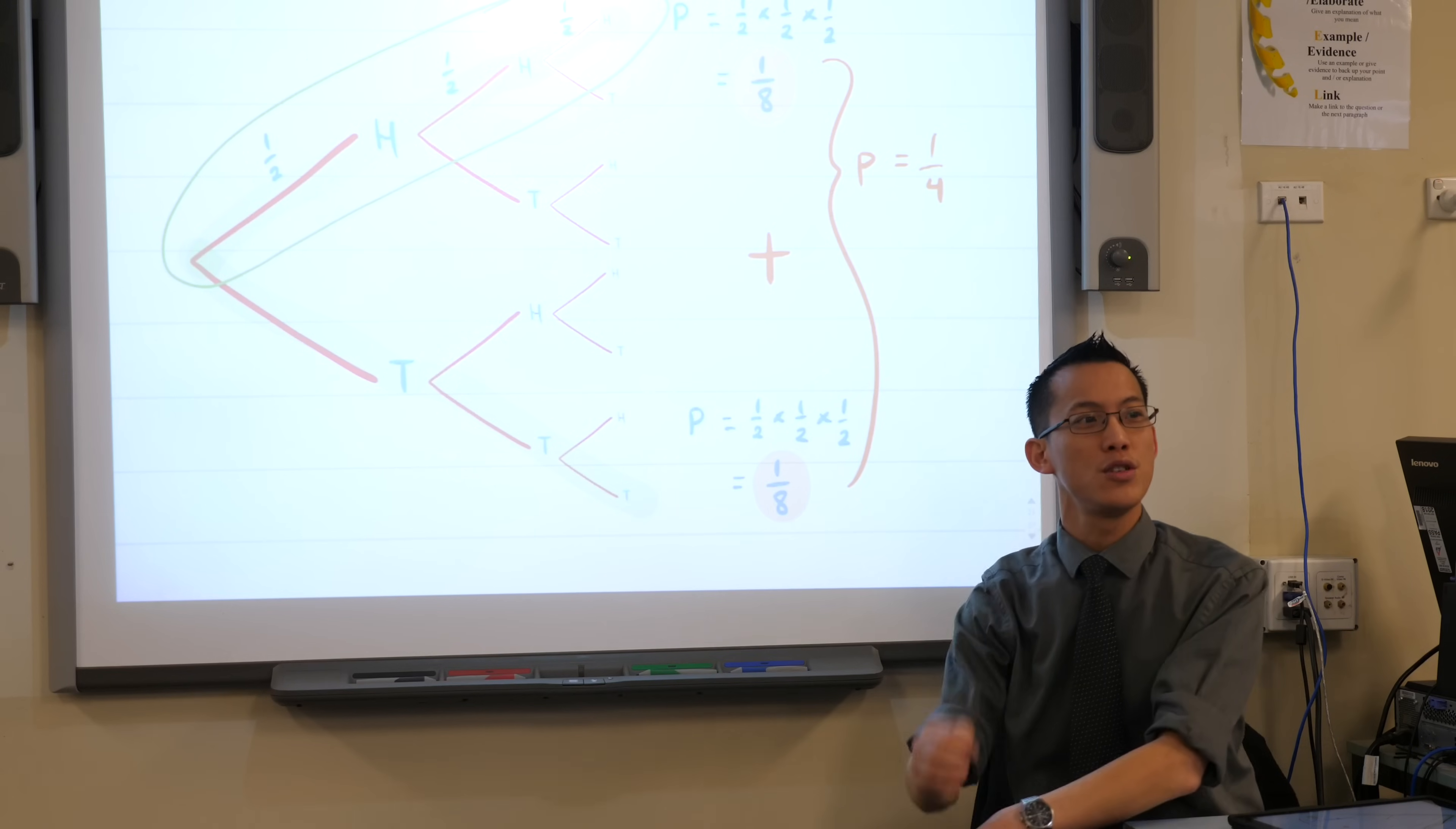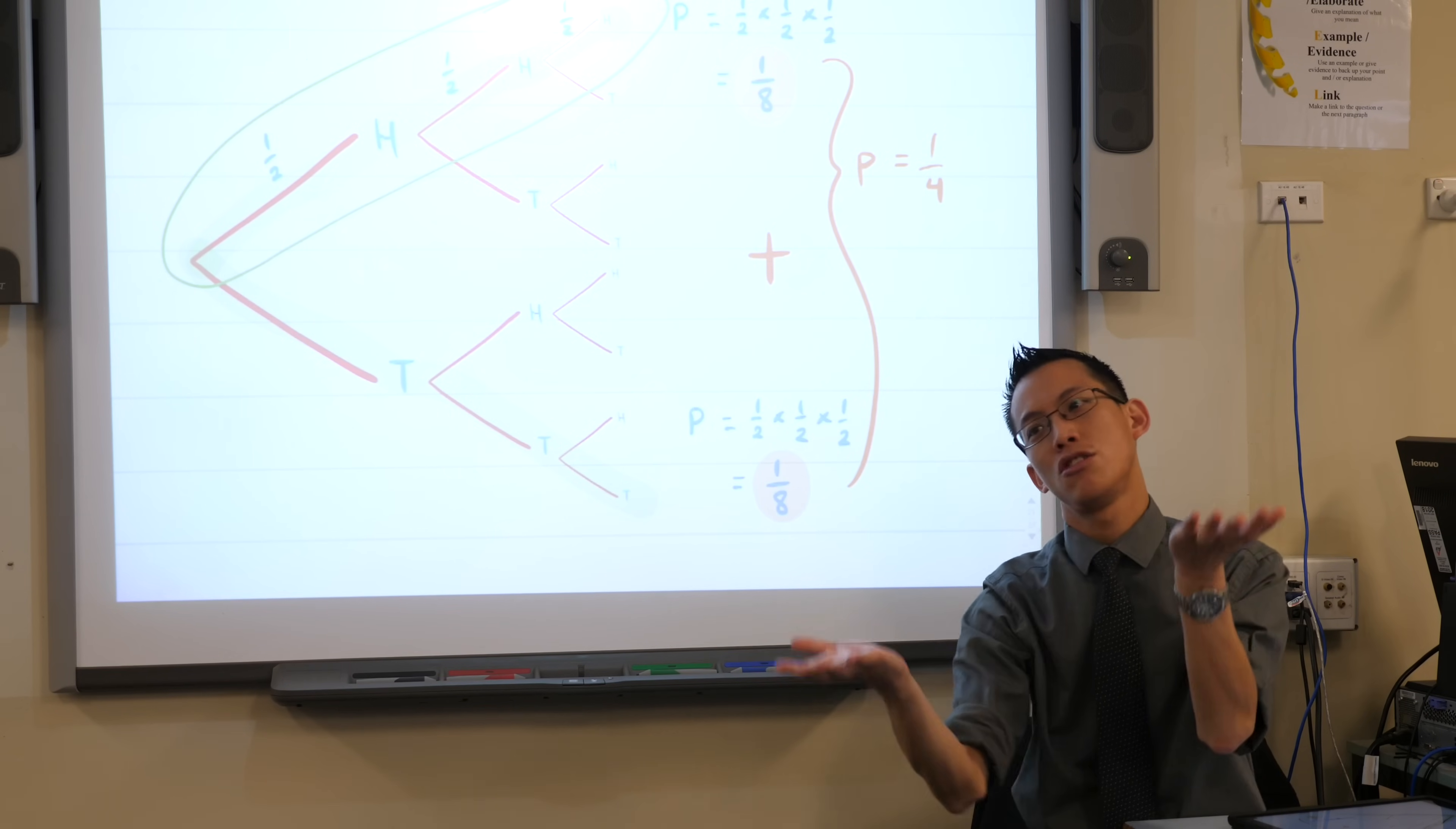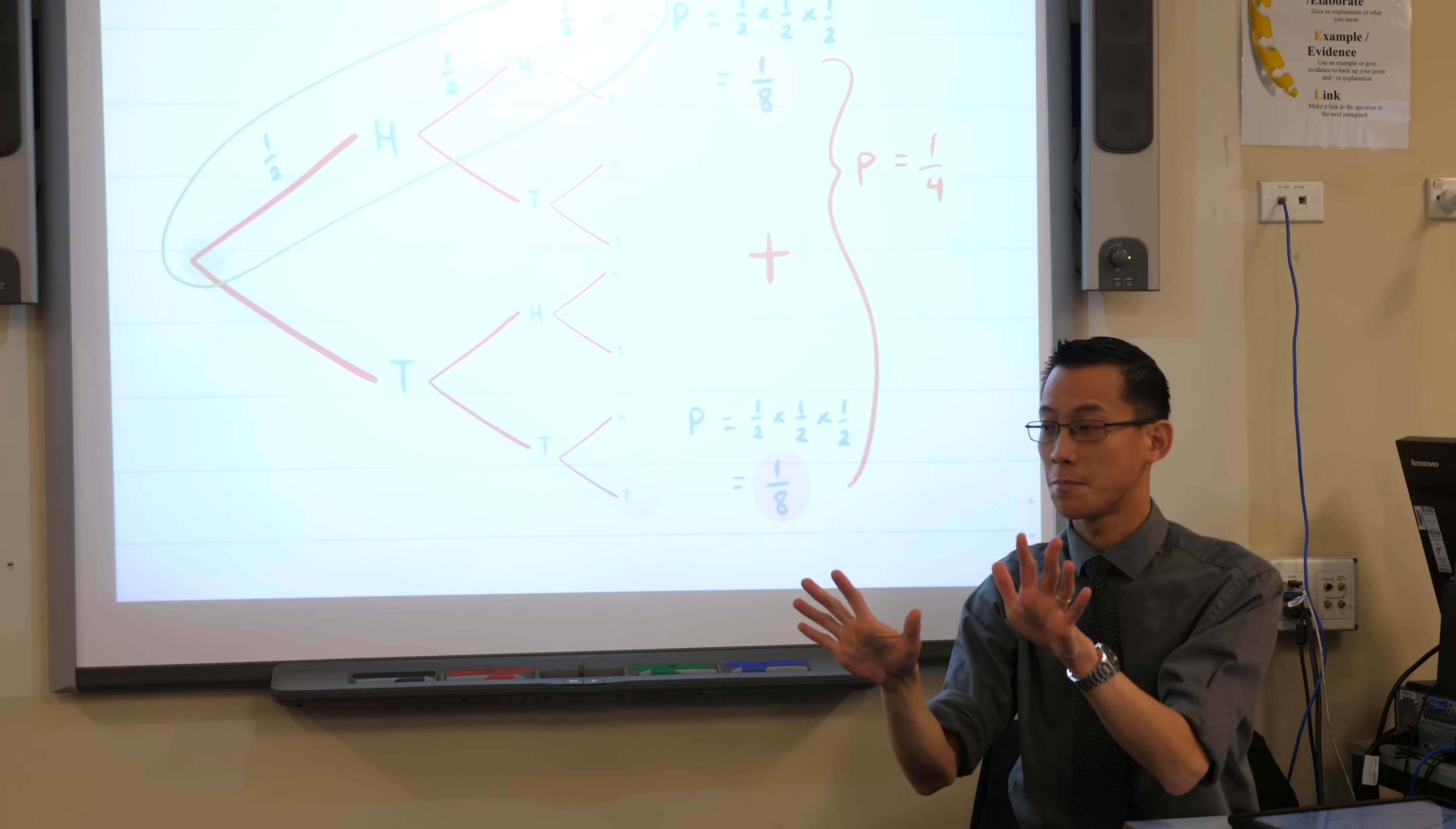So frequently in multi-stage events, you're going to have to use both addition and multiplication, and you just need to know when. Does that make sense? Thanks.